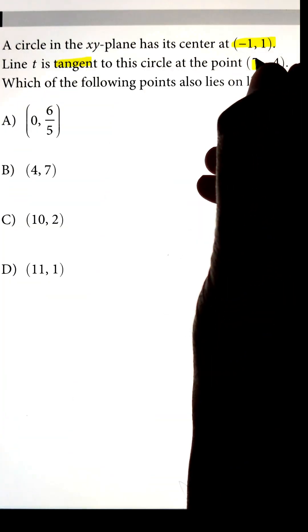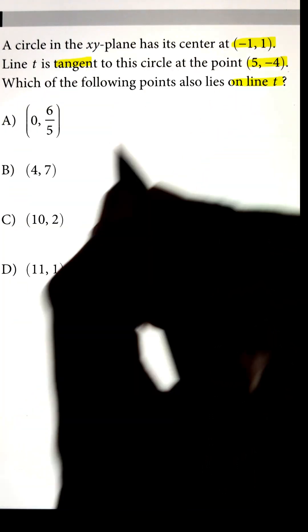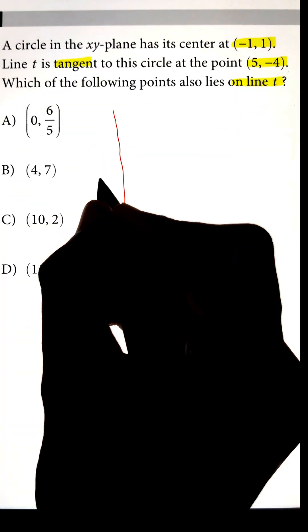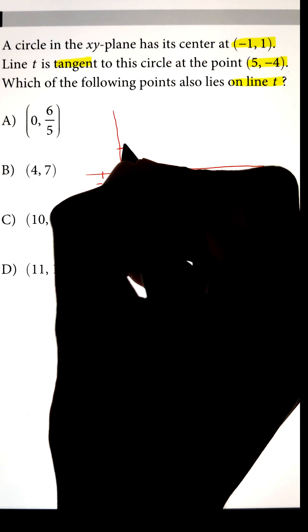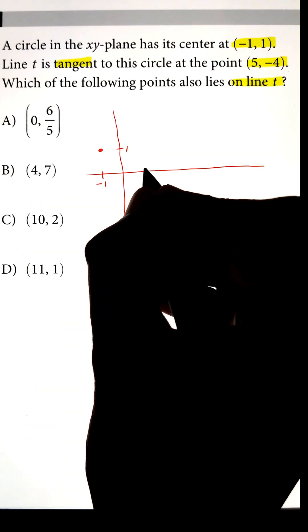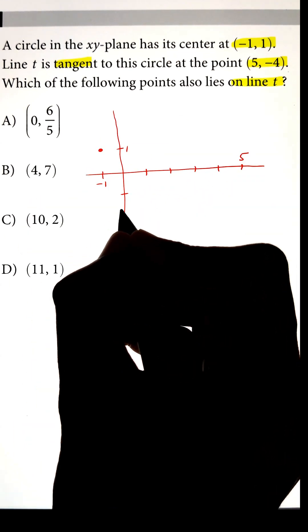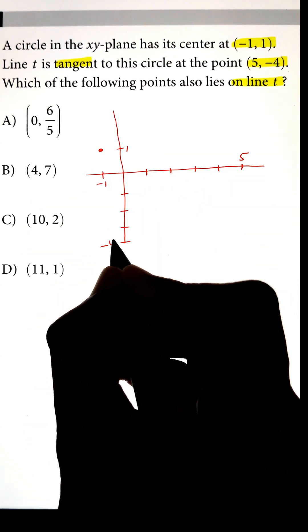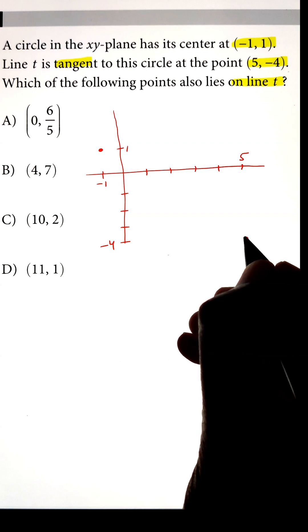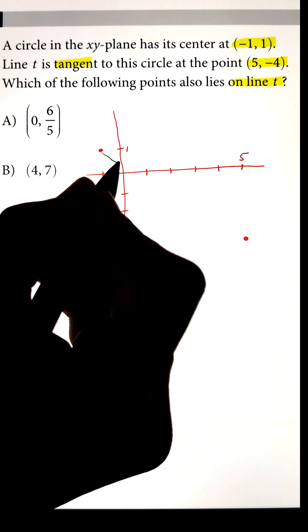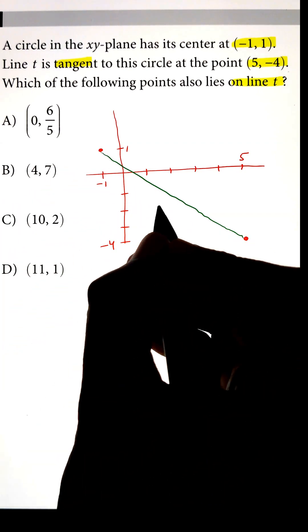If a circle on the xy-plane has a center at point (-1, 1), and line t is tangent to the circle at point (5, -4), in order to figure out which of the four given points lies on the line, we can start by plotting these two points. The distance between them is the radius of the circle.